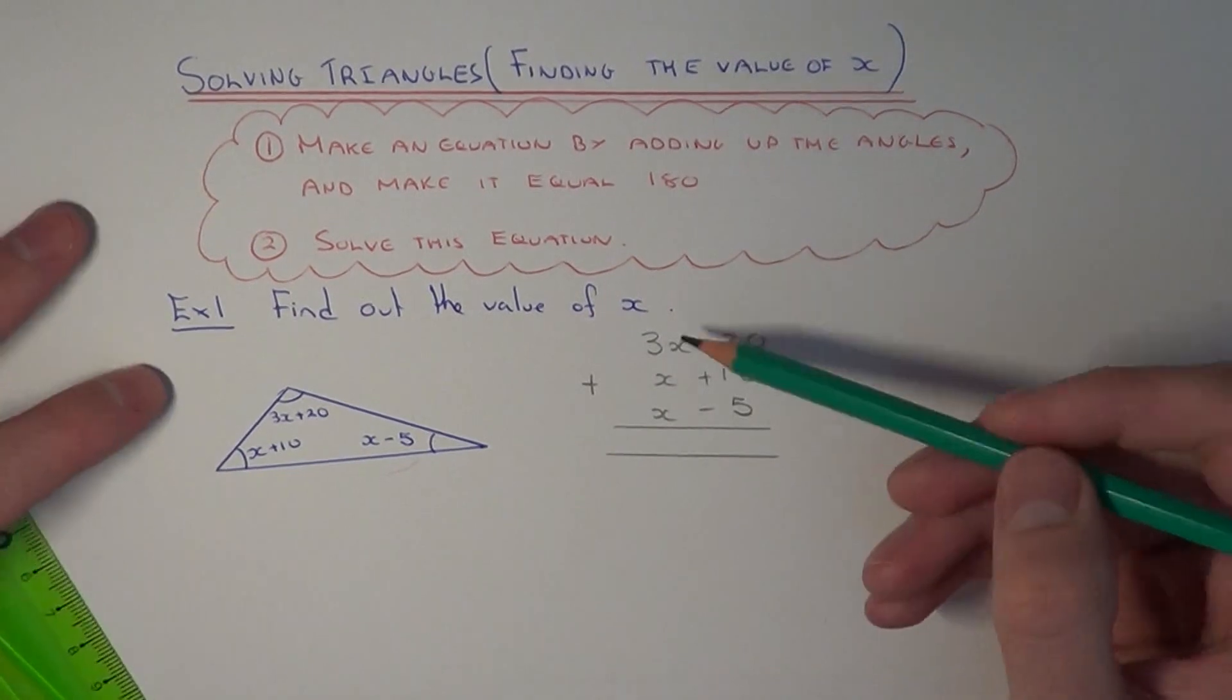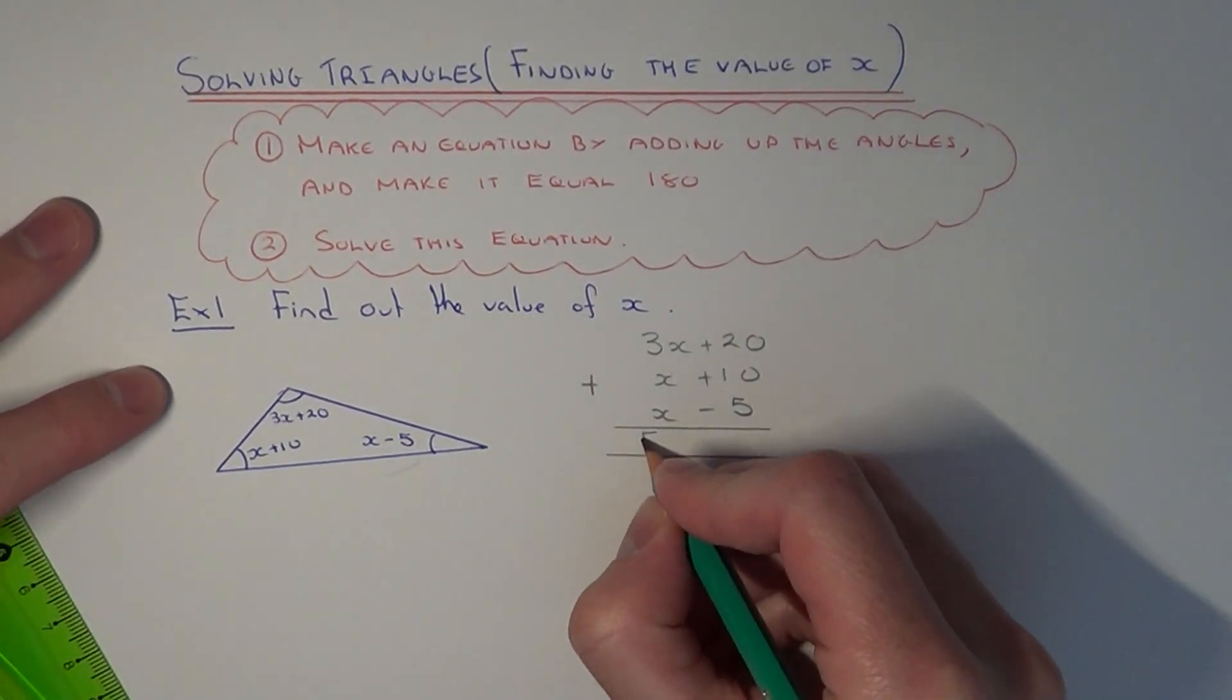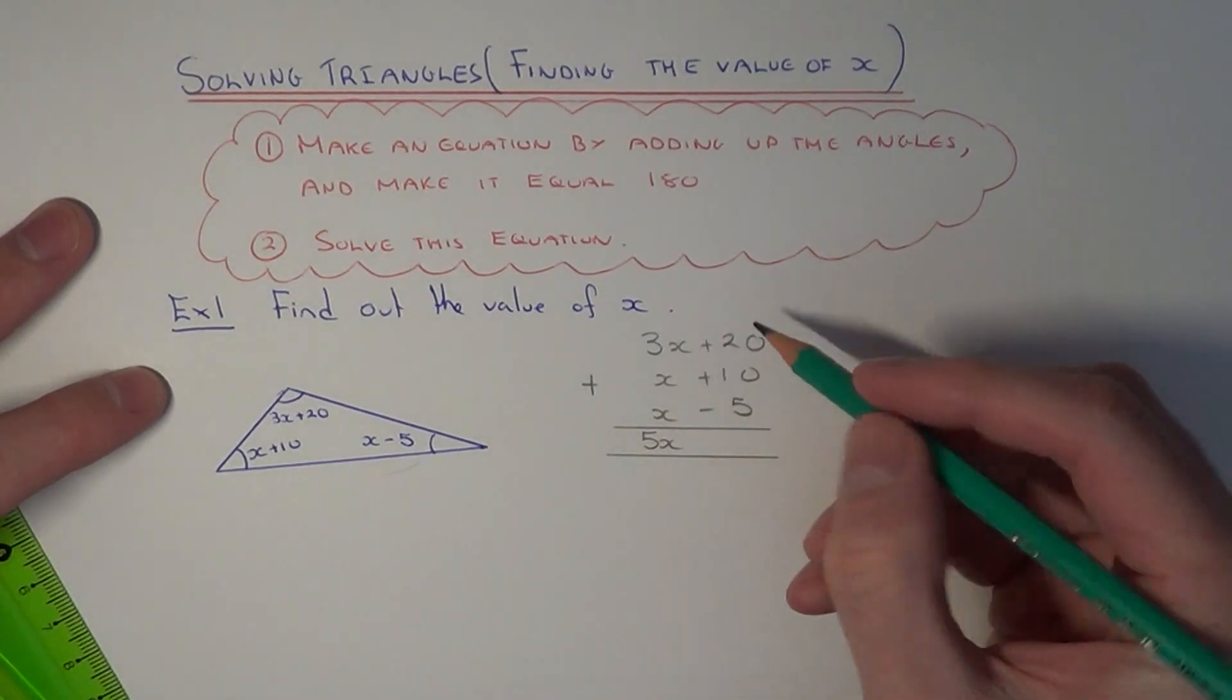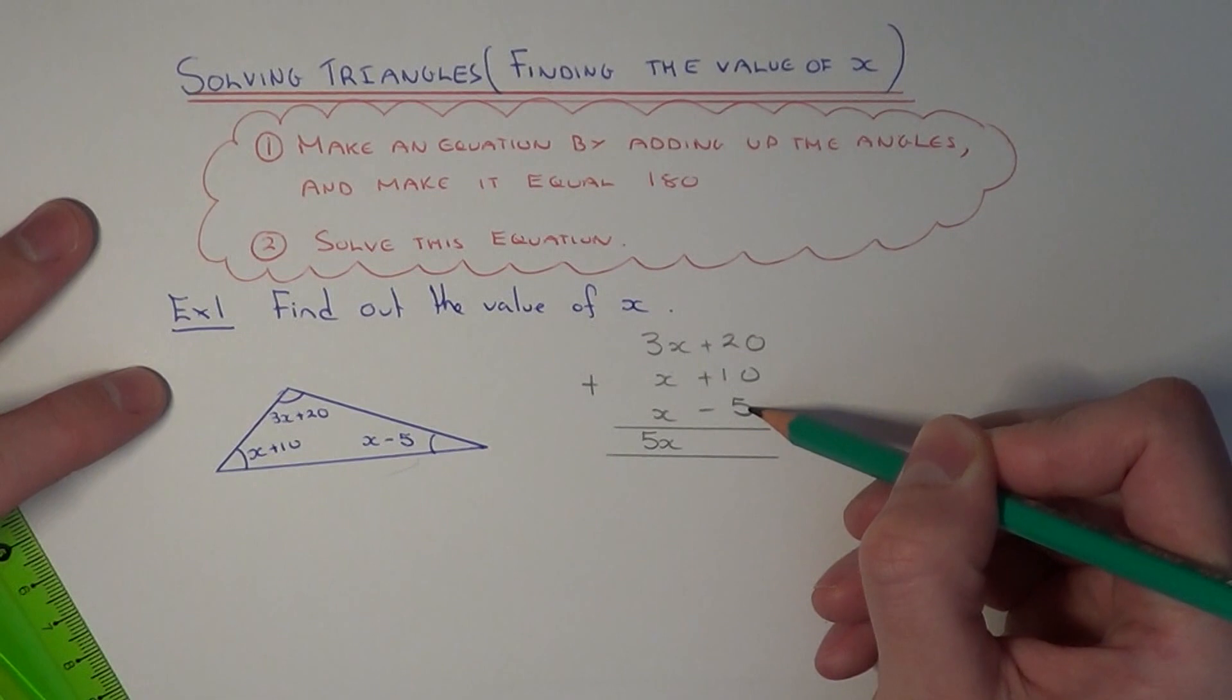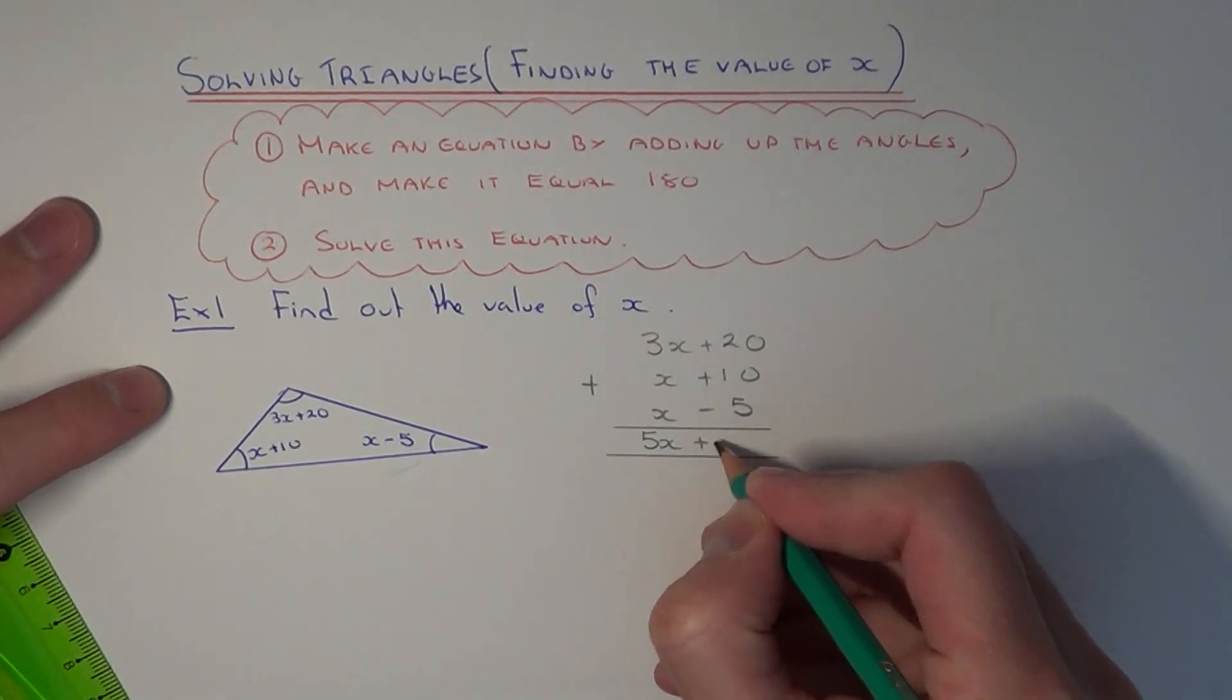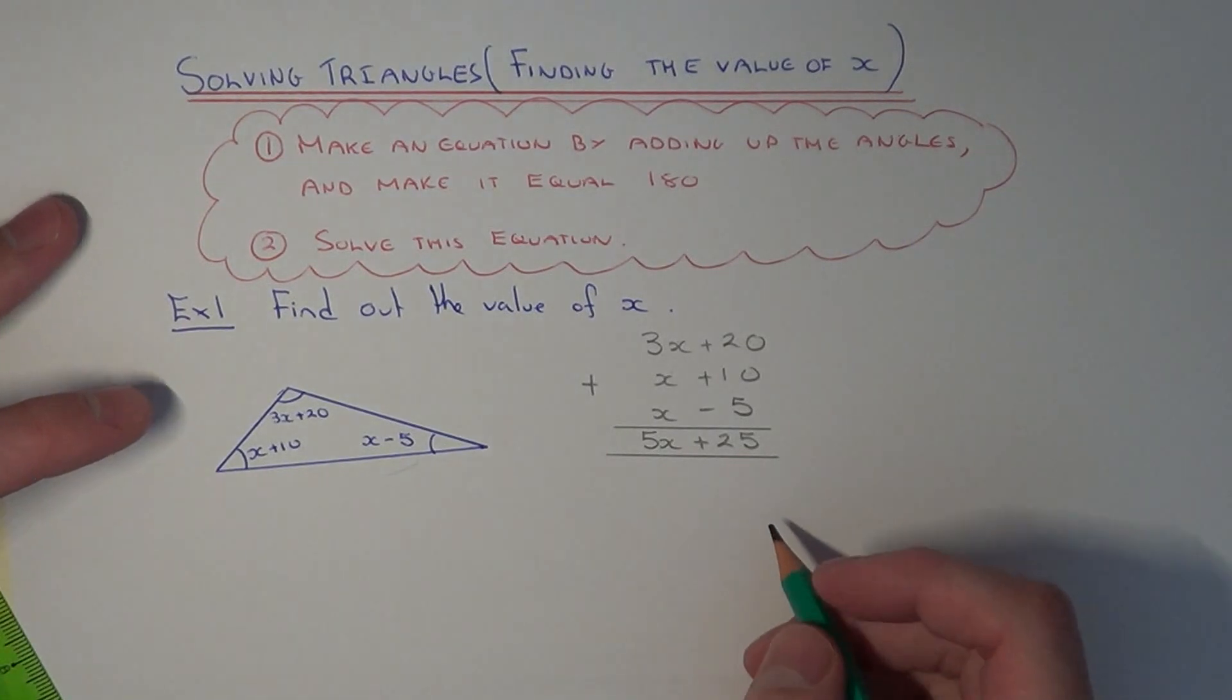If we add up the x's, 3x add 1x add 1x is 5x, and add up the number terms: 20 add 10 is 30, take away 5 is 25. So the three angles add up to 5x plus 25.